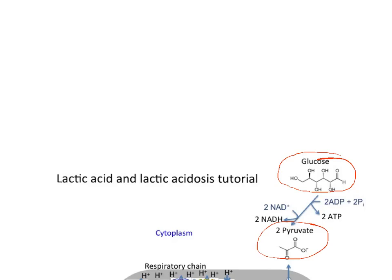There's a net production of 2 ATP in this pathway and reduction of NAD to NADH. When we say reduction, we're talking about the chemical reduction — transfer of electrons and hydrogens away from carbons in glucose to NAD to make NADH. The carbons in pyruvate are more oxidized than those in glucose. So the production of NADH and the requirement that they somehow get re-oxidized to NAD+ is at the heart of lactic acid production, and we'll get back to that in just a few moments.